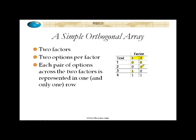Not only that, but every pair of options is represented in each row. We've got zero-zero, zero-one, one-zero, one-one. Now, this particular situation is by no means amazing — you have four rows, and two times two is four. Every possible pair is there. It's four rows.